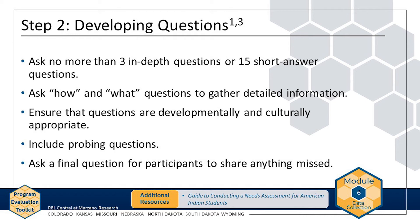Ensure that your interview or focus group questions are developmentally appropriate. For example, the AMP evaluation team identifies the AMP evaluation question — what barriers exist that prevent AMP participants from completing homework — to be answered through interviews with teachers and students. The team asks teachers, what barriers are you aware of that prevent students from completing homework? Middle school students may find it difficult to think of barriers, so a more developmentally appropriate question for middle school students might be, what makes it hard to complete homework?